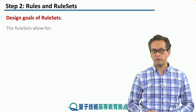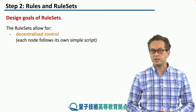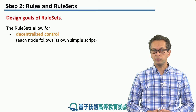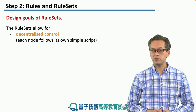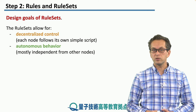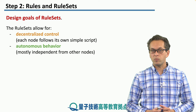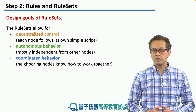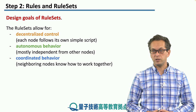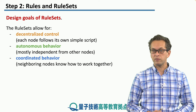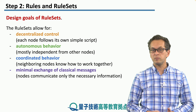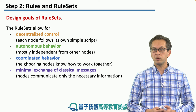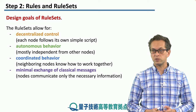The design goals of rule sets are the following. They are designed to achieve decentralized control of our quantum nodes, so each node follows its own local script — it doesn't have to give information to a central node and wait for instructions back. They also allow for autonomous behavior, where nodes are mostly independent from other nodes. Thirdly, they allow for coordinated behavior despite the lack of centralized control, so neighboring nodes know how to behave and when to work together. Finally, rule sets are designed so that only minimal exchange of classical messages is needed, since passing too much classical data between nodes would slow down network performance.